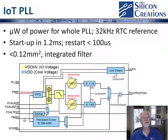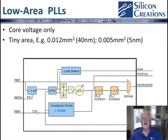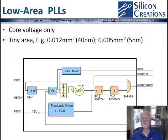Despite being fully integrated, it only uses a small amount of die area. Another example is our low-area PLL. This IP uses only core voltage and has been used to clock digital circuits and for mobile audio devices clocking audio codecs.